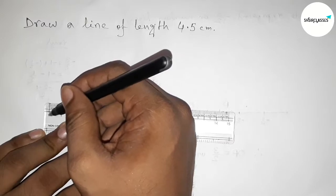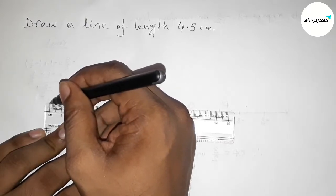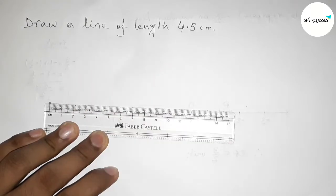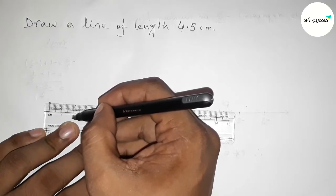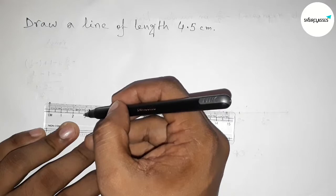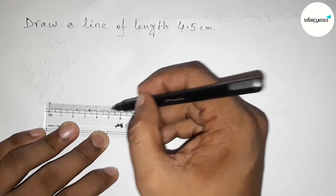Start at 0, so first mark here at 0. Now count to 4.5 from 0: this is 1 centimeter, 2 centimeters, 3 centimeters, 4 centimeters.